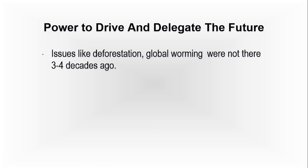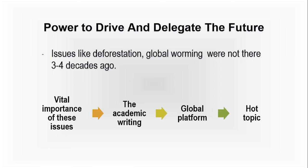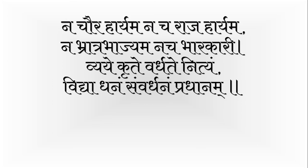Academic writing has the power to drive and shape the future. We were not talking about deforestation or global warming three or four decades ago. We came to know about these vital important issues when academic writing highlighted them on a global platform. These issues became hot topics only because they were presented in an effective and convincing manner with effective evidence. Without the effective presentation of these issues in the form of academic writing, they would have been unexplored or unattended.